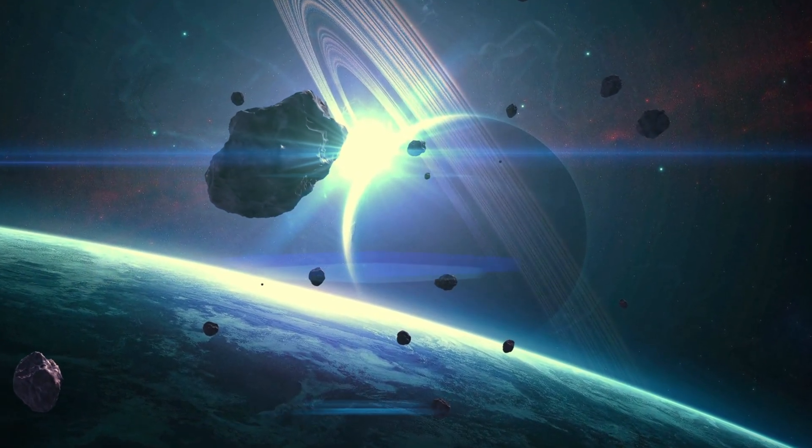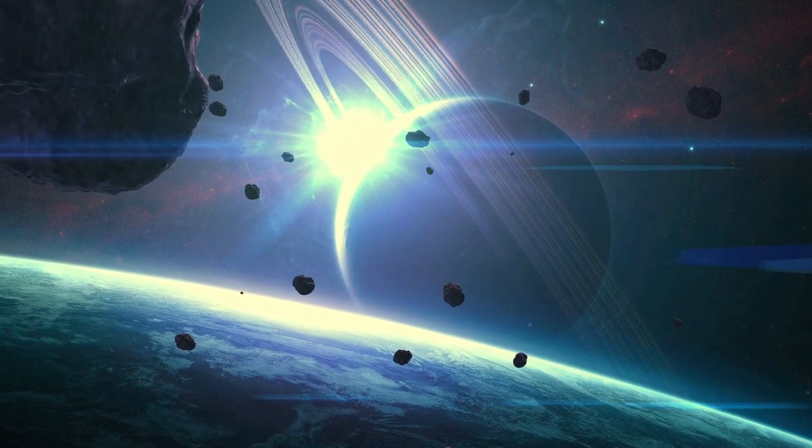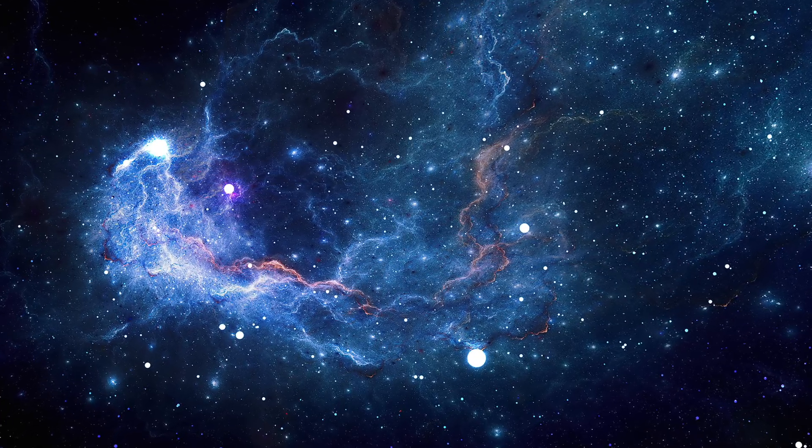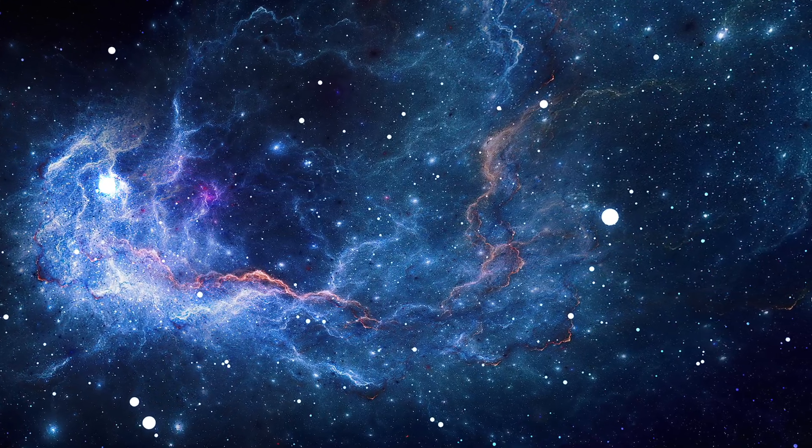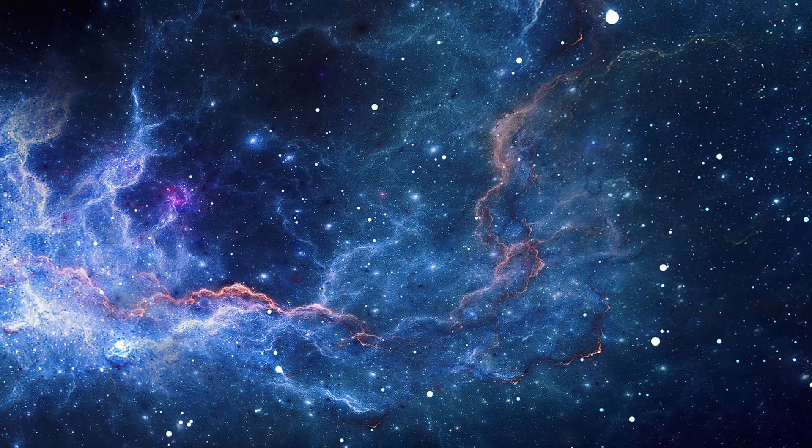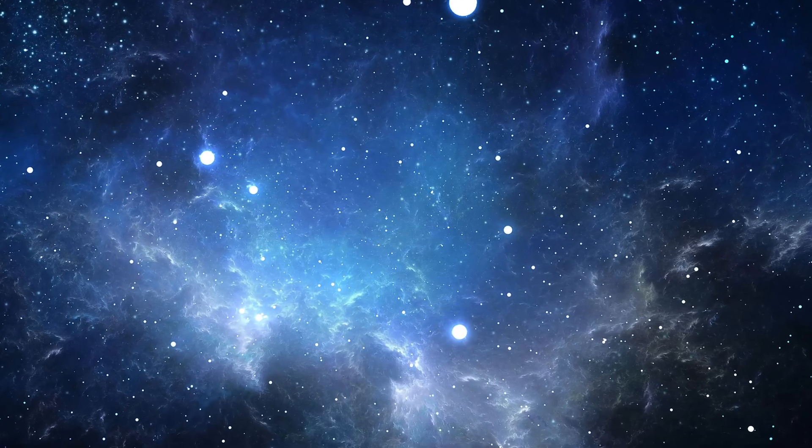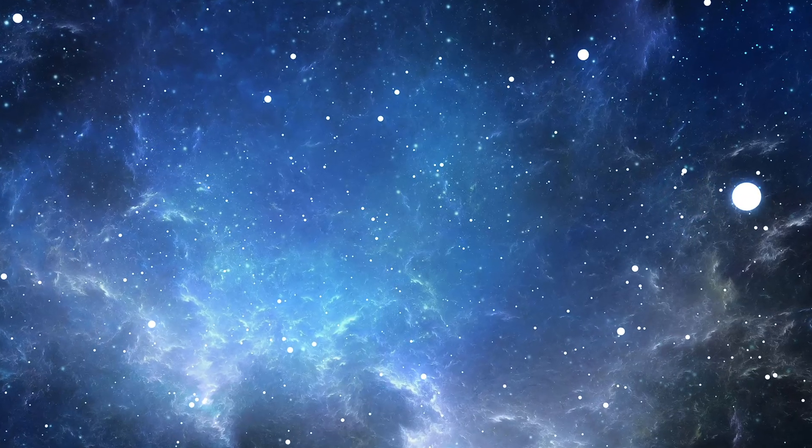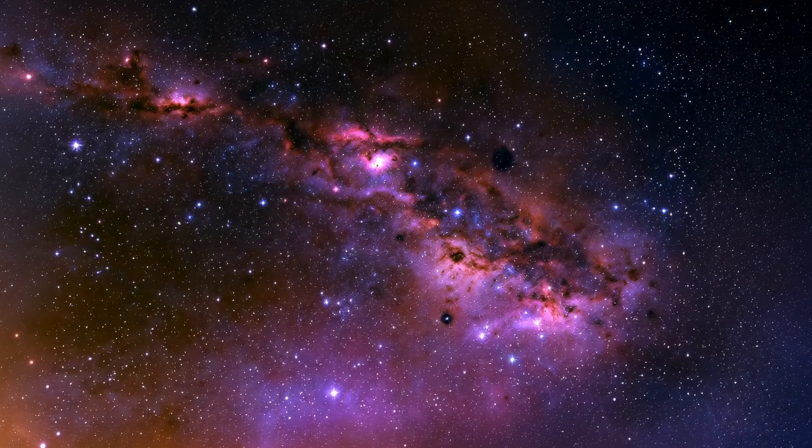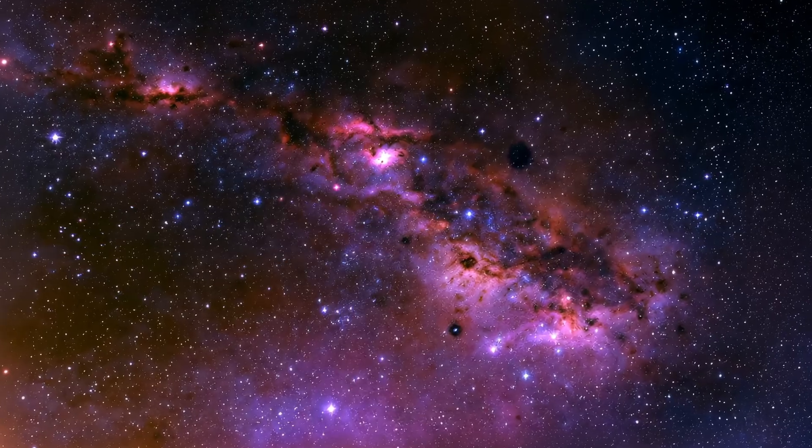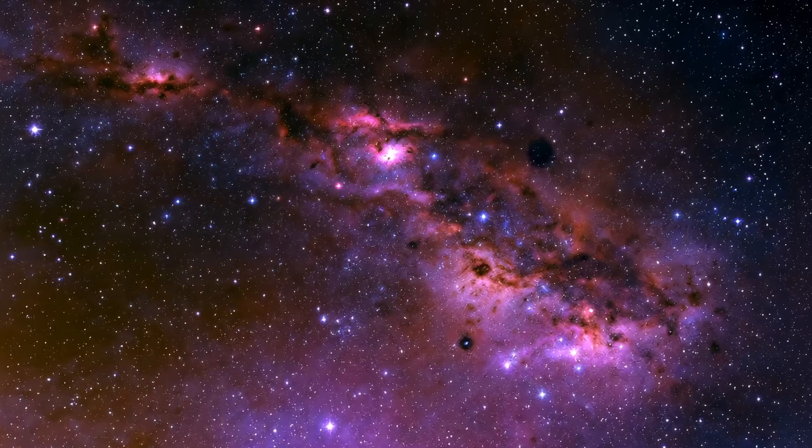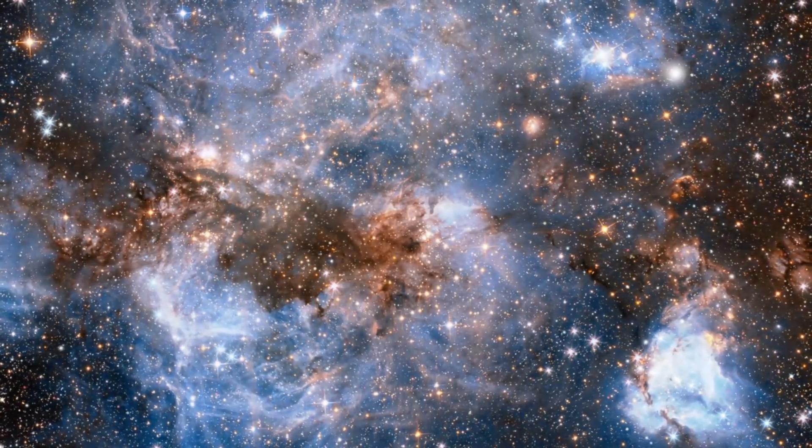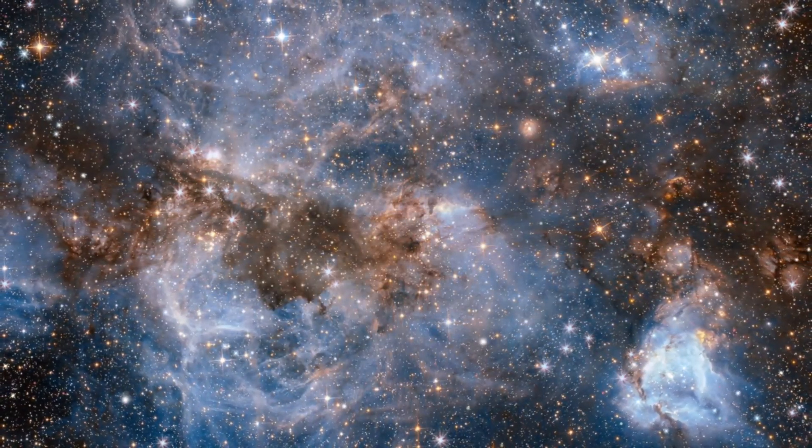Our sun is just one star among roughly 400 billion in the Milky Way galaxy, a vast spiral island of light stretching 100,000 light-years across. Even moving at the speed of light, it would take a photon 100,000 years to cross from one edge to the other. If you could look at the Milky Way from far away, you'd see its graceful spiral arms, like the whirls of a seashell, glowing with the combined light of countless suns. Between those arms are vast stretches of interstellar dust and gas, the raw material from which new stars and planets form. Our solar system sits quietly in one of these spiral arms, about 27,000 light-years from the galactic center. At that center lies a supermassive black hole, known as Sagittarius A*, containing the mass of 4 million suns. Around it, stars orbit like sparks caught in a cosmic whirlpool, moving at thousands of kilometers per second.